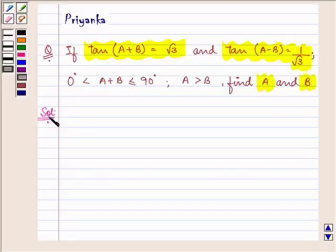Let us rewrite whatever is given to us in the question. But before that we should be well versed that the value of tan 60 degrees is equal to root 3, and the value of tan 30 degrees is equal to 1 by root 3.